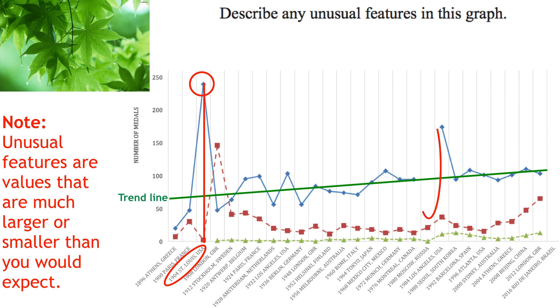Let's have a look at what else we have. We've got a gap in 1980 — if I follow that down, that gives us 1980 in Moscow, and that's when the US boycotted the Olympic Games, so that's another unusual feature — there's missing data. And the other peak, a very unusually high value, if I follow that down, tells us it occurred in 1984 in Los Angeles in the US.